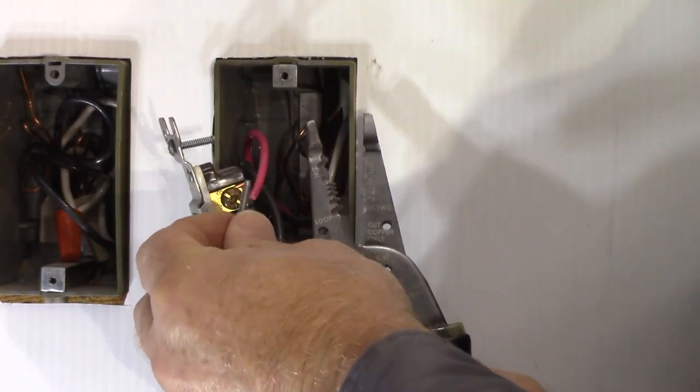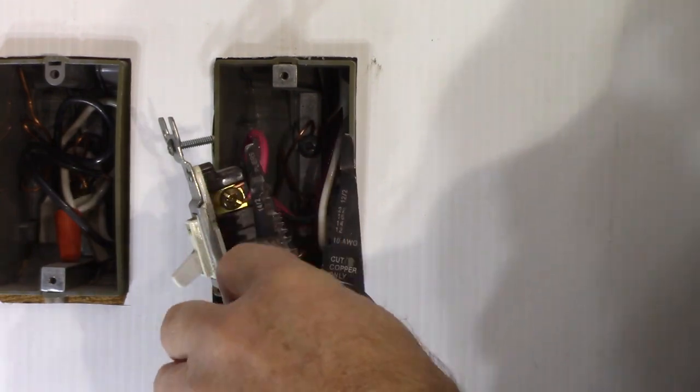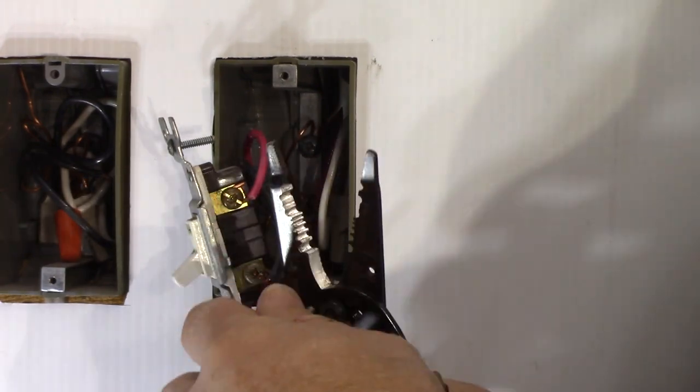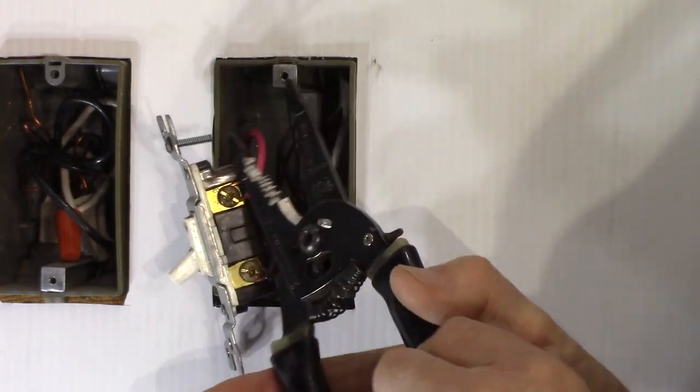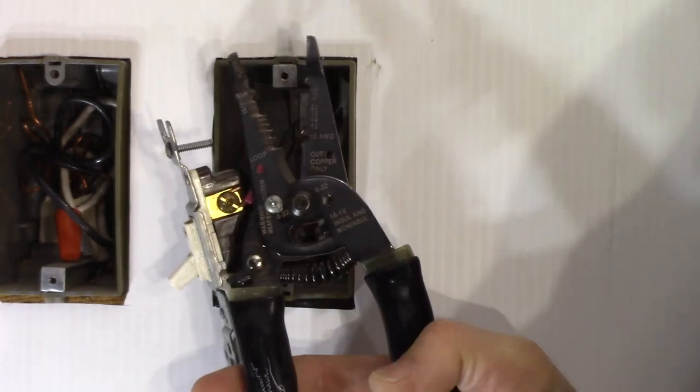8-32s are mostly for box mounting screws like in octagon box, outlet box. So these are 6-32. So what you do is you just thread that machine screw into the hole and you thread it through to the other side. See how long you want it and you cut it off.